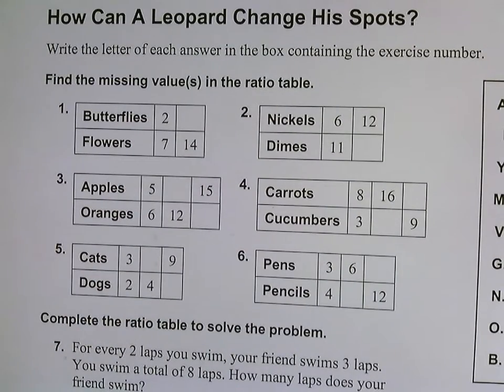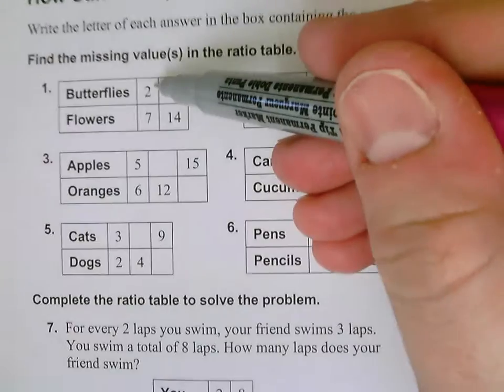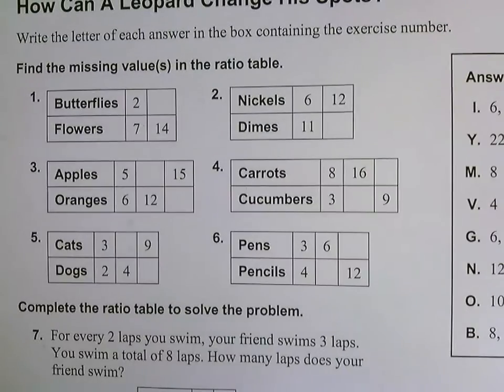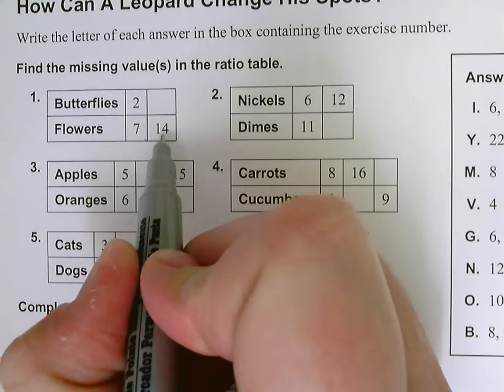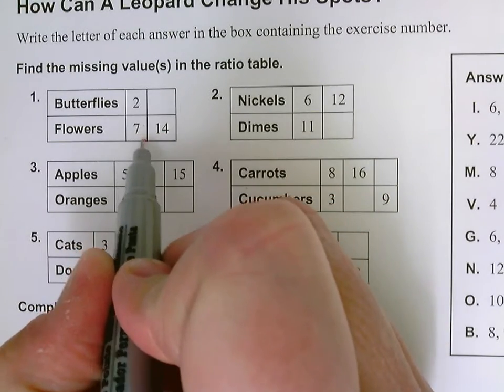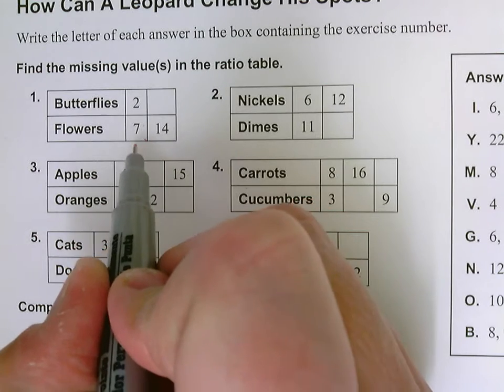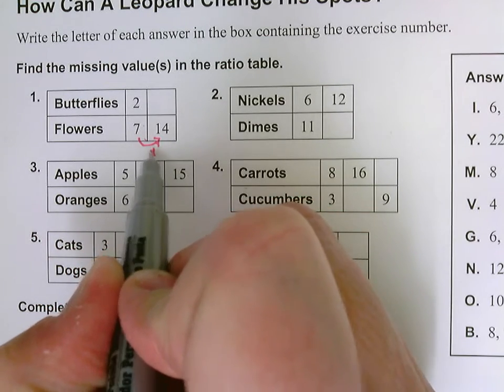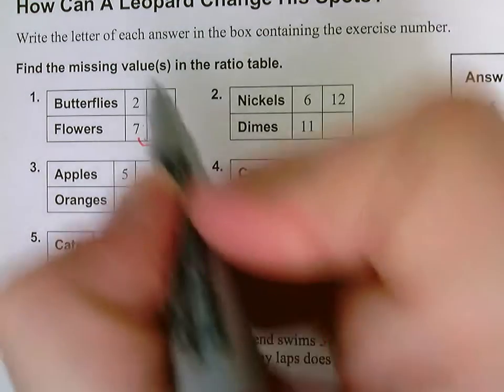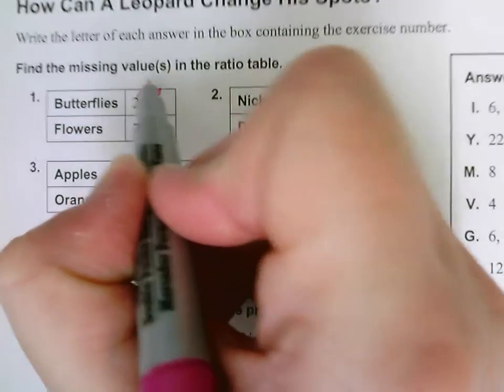Let's take a look at the first one: butterflies to flowers. It says that there are two butterflies to every seven flowers. The next number is 14, so I went from seven to 14, so I know that I could have actually added seven here. Seven plus seven is 14, so I could do two plus two to get four.